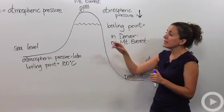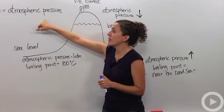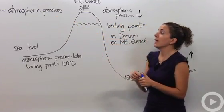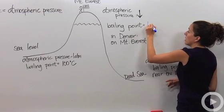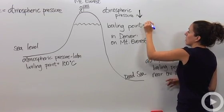What's going to happen to the boiling point? Because vapor pressure has to equal atmospheric pressure, the atmospheric pressure lowers, that means the vapor pressure doesn't have to go up as high. That means the boiling point is also going to lower.